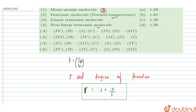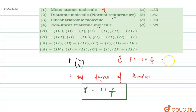For the monoatomic molecule, the degree of freedom is equal to three. Using the formula, gamma is equal to one plus two by three, which is equal to 1.6667, approximately 1.67. So the answer for the monoatomic molecule corresponds to option B.